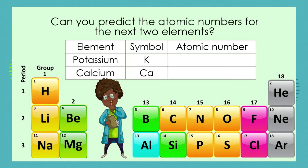Now that we understand the pattern in how elements are arranged, let's see how good a chemist you are. Can you predict — which means make an educated guess — the atomic numbers for the next two elements? We're looking at the first 18 elements, and we can see that argon, the 18th element and the last element in the third period, has an atomic number of 18.